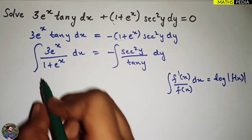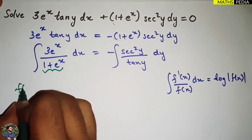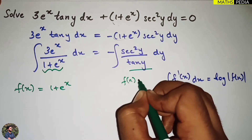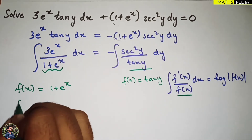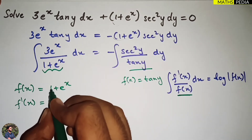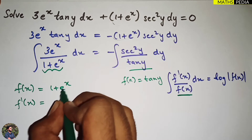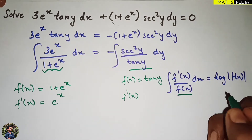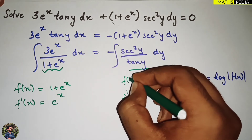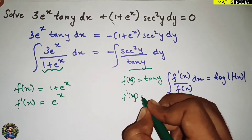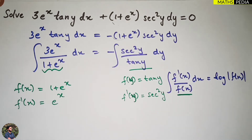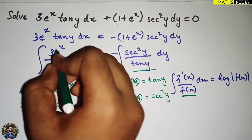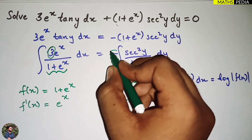You can identify: f(x) here is (1 + e^x), the denominator. For the y side, f(y) is tan(y). Now f'(x) — the differentiation of (1 + e^x) — is e^x, since the derivative of 1 is 0 and e^x differentiates to e^x. For f'(y), differentiating tan(y) with respect to y gives sec²(y). So both sides are in the required form.